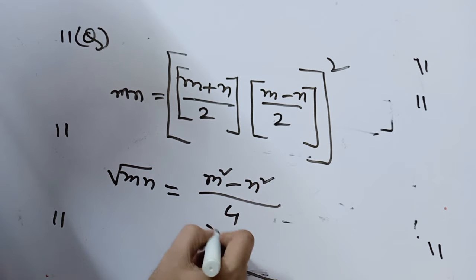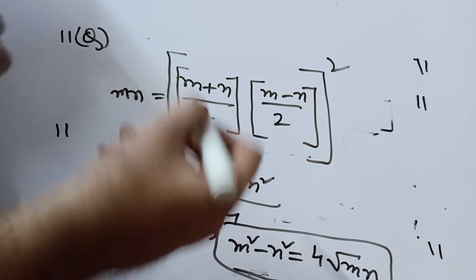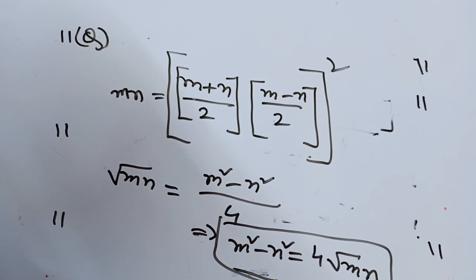Hence, you can see that m square minus n square is equal to 4 root mn. Hence, our answer. One of the tough problems to handle in trigonometry. End of lecture.